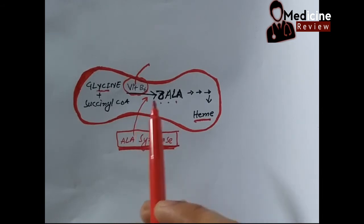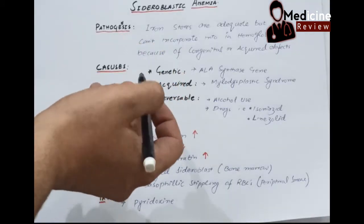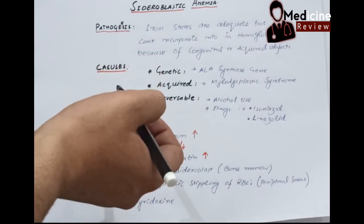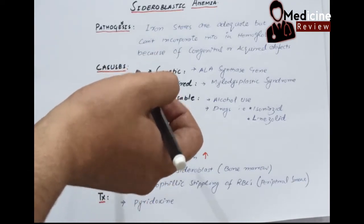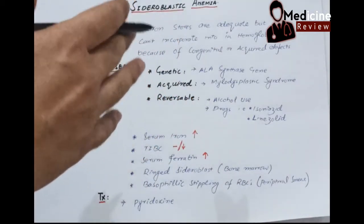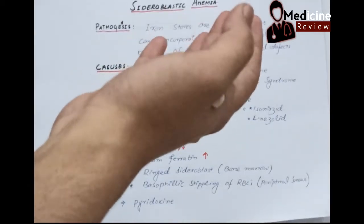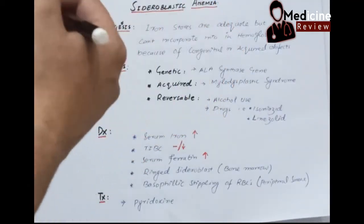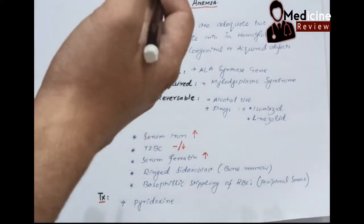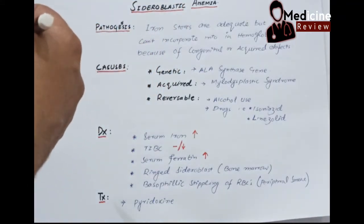Another is acquired. In acquired, there is myelodysplastic syndrome. It is a syndrome which is a combination of different disorders where one lineage or more than one lineage of cells in the bone marrow is defective.